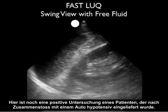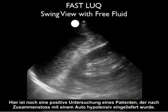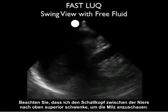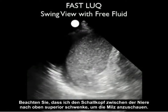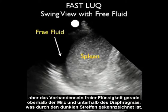Here's another positive examination in a patient who comes in hypotensive after being hit by a car. Notice I'm swinging the probe between the kidney up superiorly to look at the spleen. Notice the absence of fluid between the spleen and the kidney, but the presence of free fluid right above the spleen and below the diaphragm, indicated by that dark stripe.